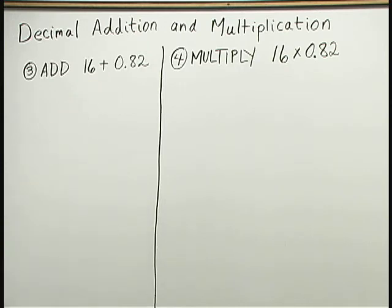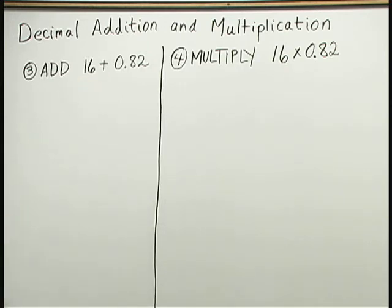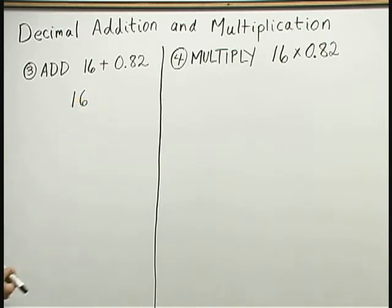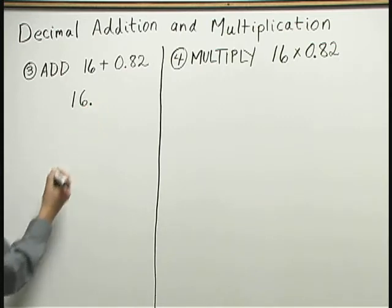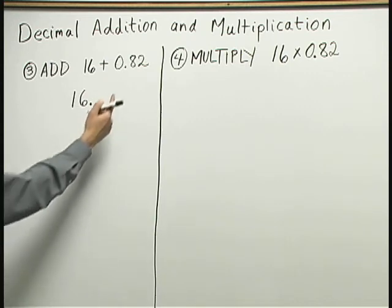16 plus 0.82. The 16 is a whole number. Any whole number can be written as a decimal. Let me recopy that 16. If I want to write a whole number as a decimal, I need to put the decimal point at the right end of that number, just to the right of the ones place.